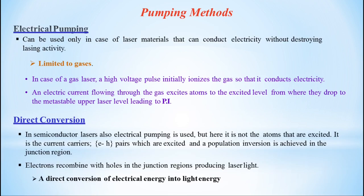Another method is electrical pumping, which can be used only in case of laser materials that can conduct electricity without destroying lasing activity. This pumping process is limited to gas lasers. In a gas laser, a high voltage pulse initially ionizes the gas so that it conducts electricity. An electric current flowing through the gas excites atoms to the excited level, from where they drop to the metastable state, leading to population inversion. In semiconductor lasers, electrical pumping is also used, but here it is not atoms that are excited — it is the charge carriers, i.e., electron and hole pairs, which are excited, and population inversion is achieved in the junction region between N and P semiconductors.